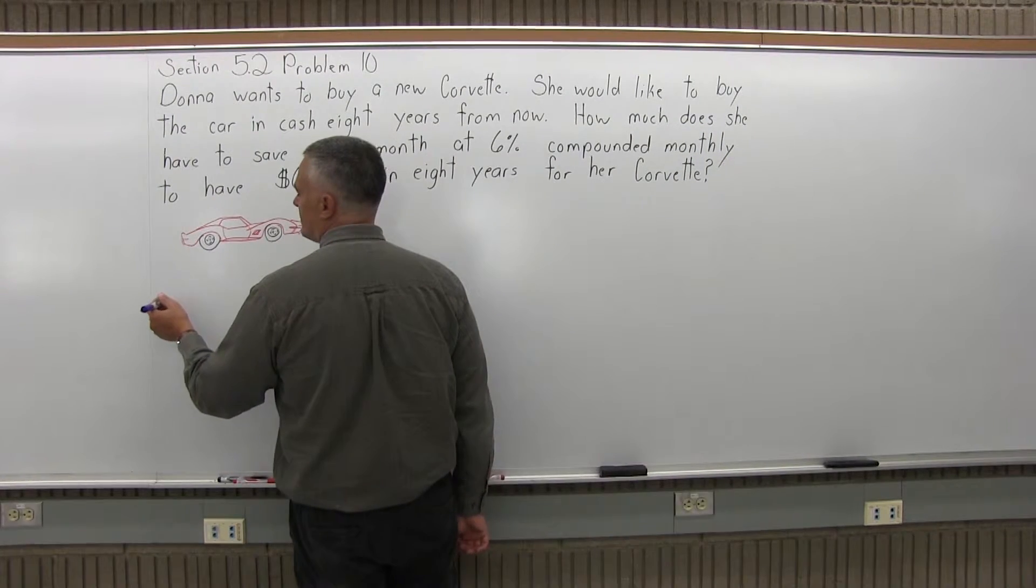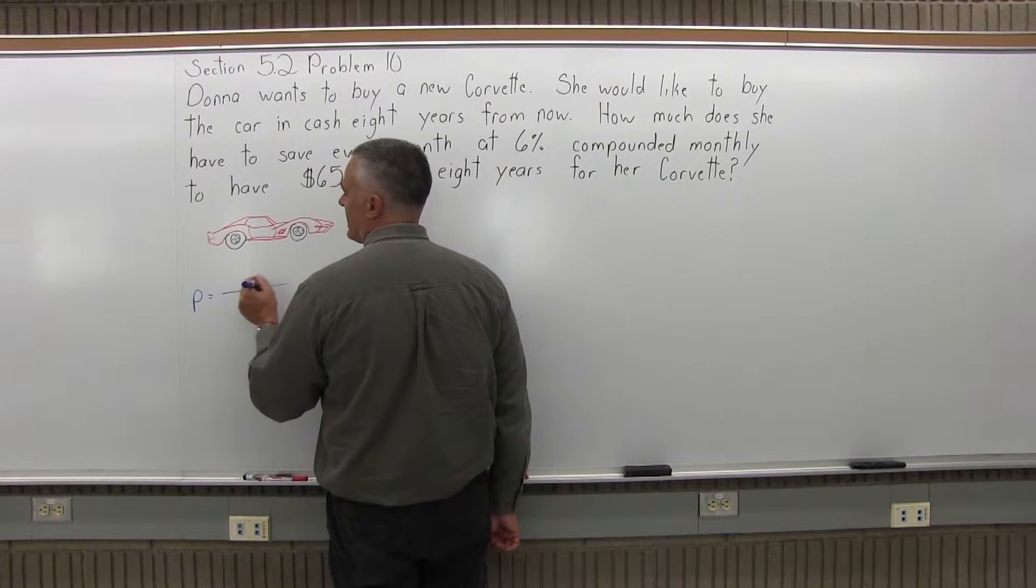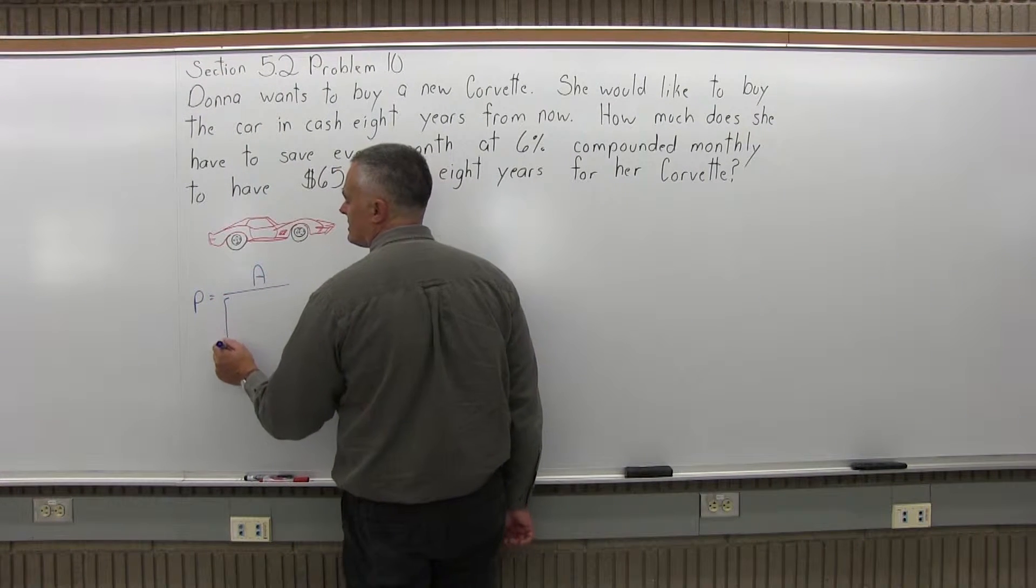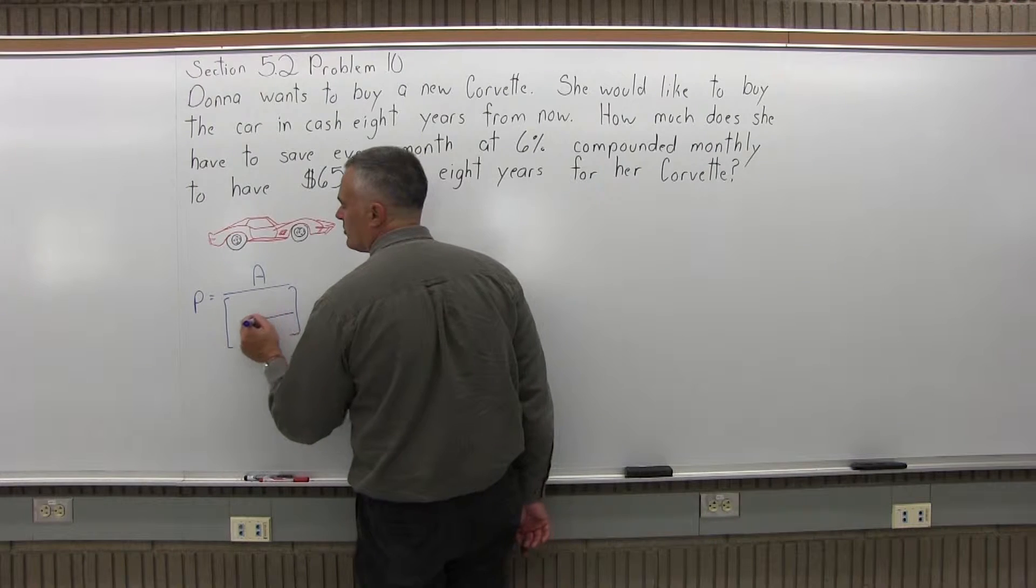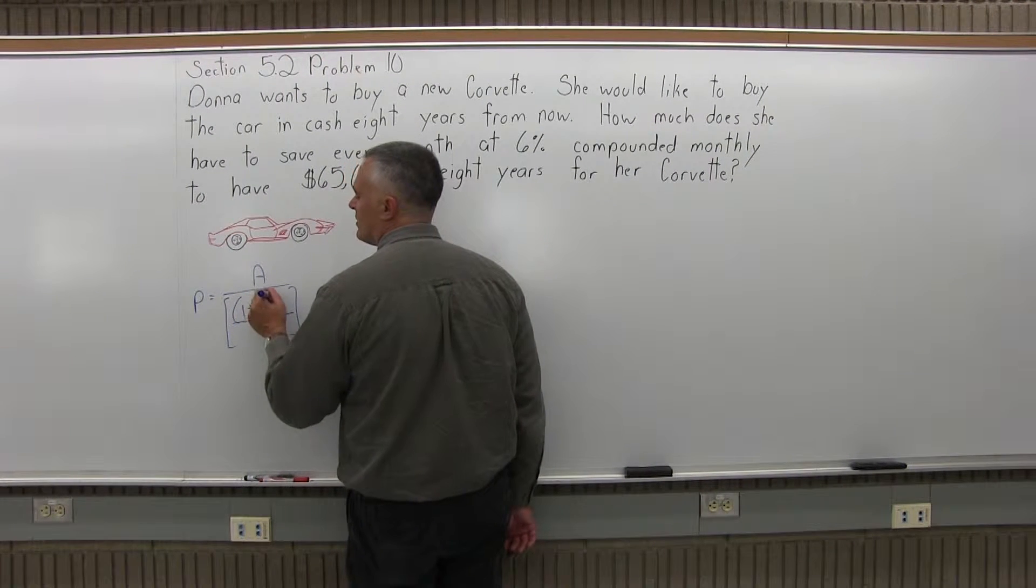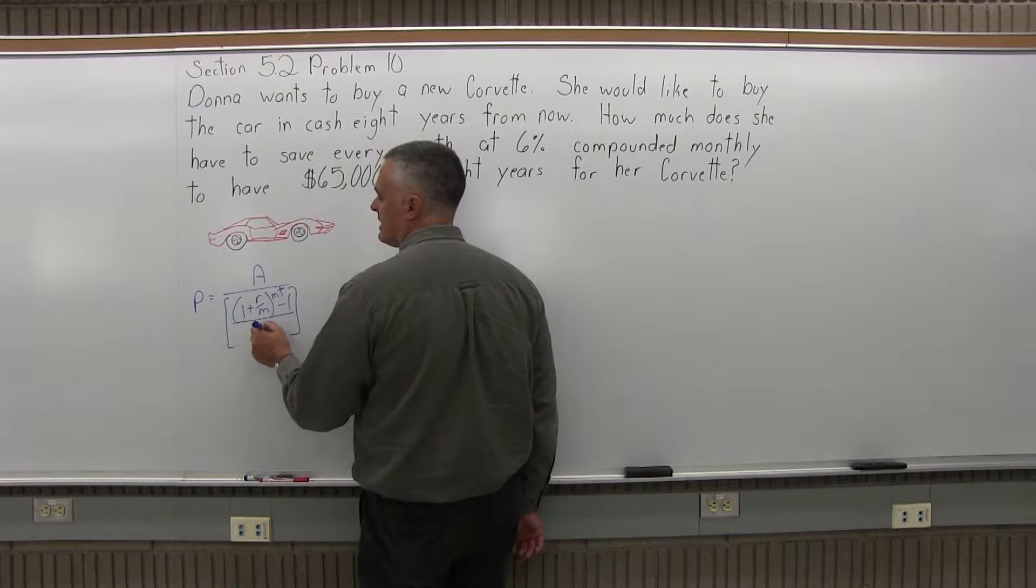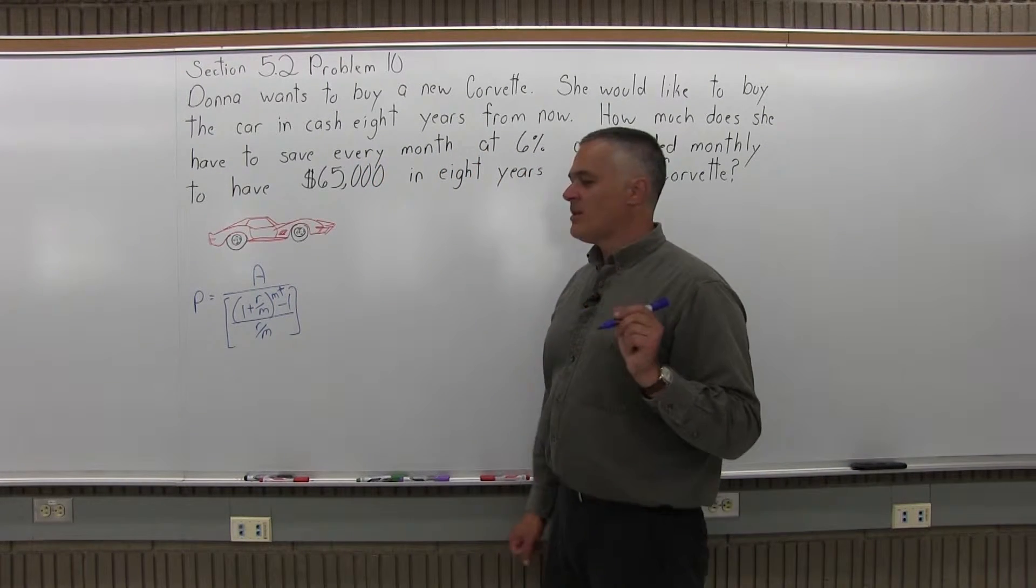So the sinking fund formula is P equals A over some brackets, and in the brackets there's a numerator and a denominator. In the numerator we have (1 + R/M) raised to the M times T power, minus 1 after the parentheses, and then R/M again in the denominator of the brackets.